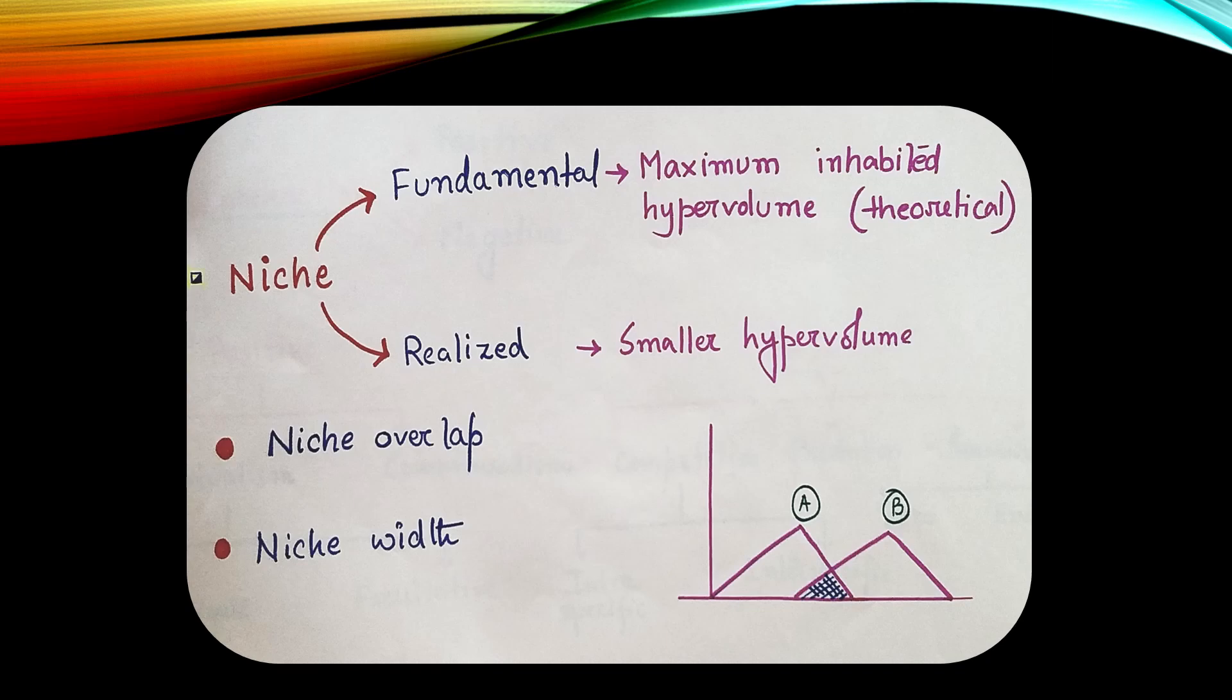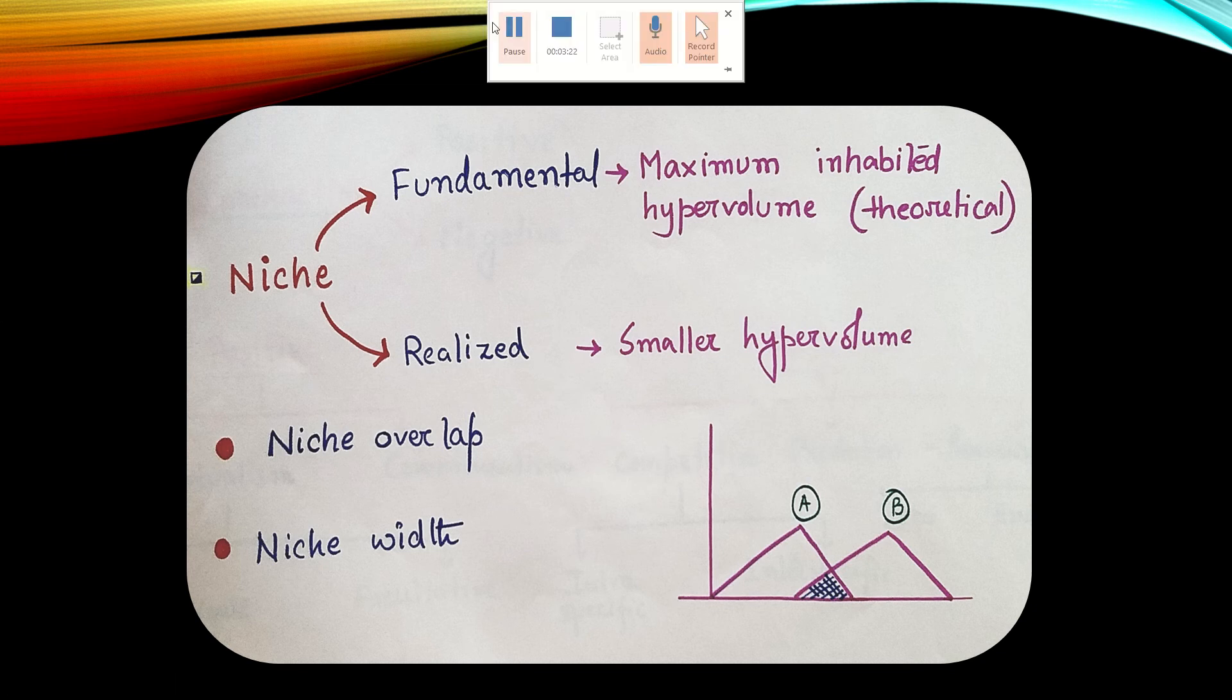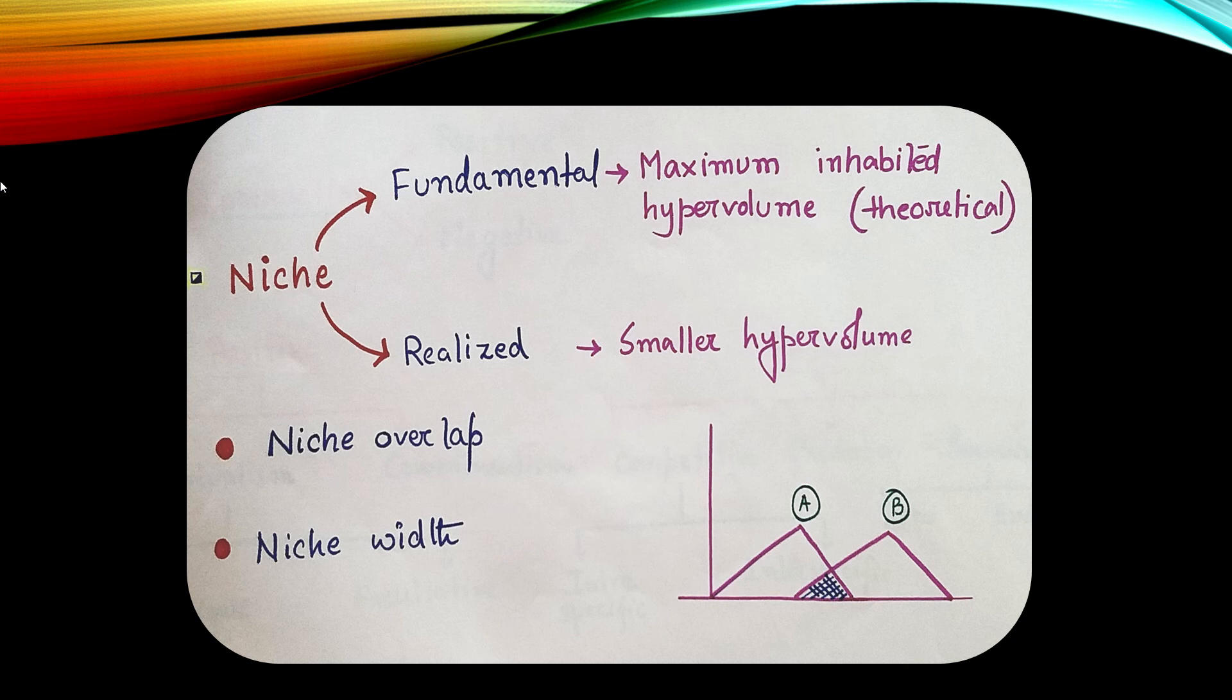Niche can be of two types. One is the fundamental niche. The other is the realized niche. Fundamental niche is the maximum inhabited hypervolume, which is more of a theoretical concept. On the other hand, realized niche is the real scenario where the organism is living. It is the smaller hypervolume.